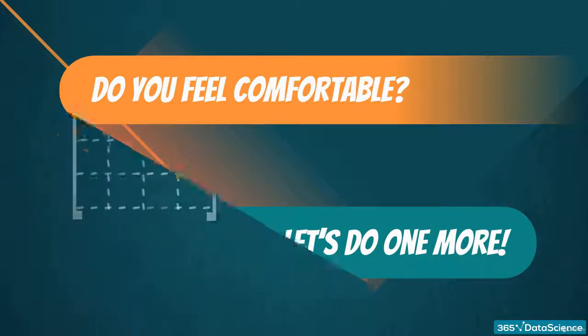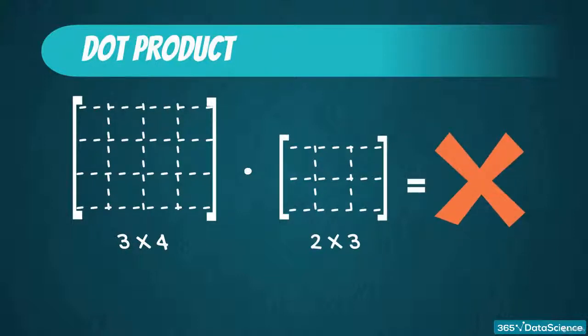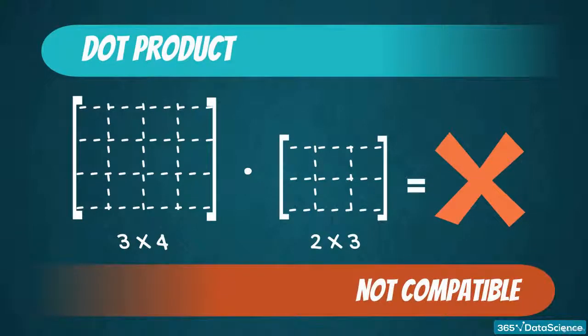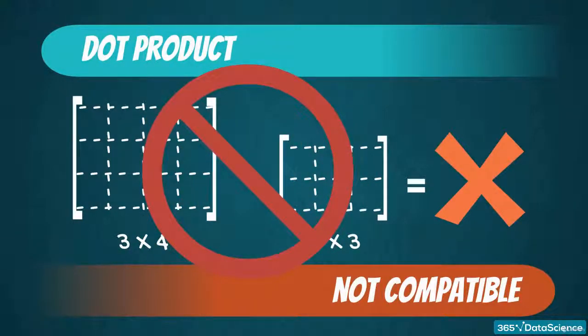This matrix multiplied by that one. A 3 by 4 matrix times a 2 by 3 matrix. What will the dimensions of the output matrix be? 3 by 3, no? Wait, wait, wait, wait! It's not 3 by 3. In fact, it's nothing. The two matrices are not compatible! It is very important to remember that more often than not, you will not be able to multiply two matrices. So, please take good note of the shapes.